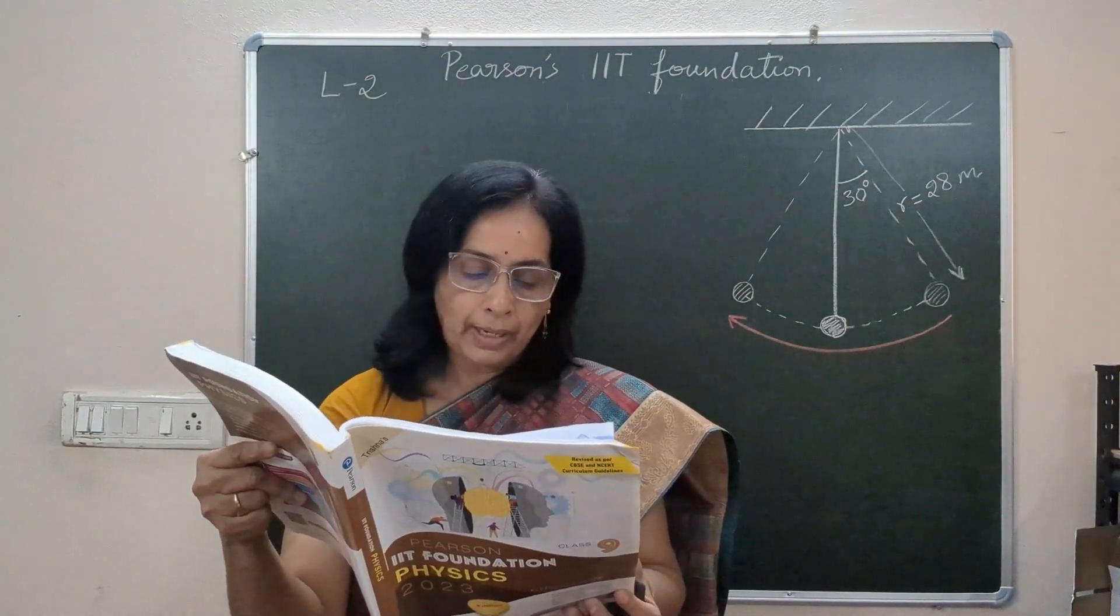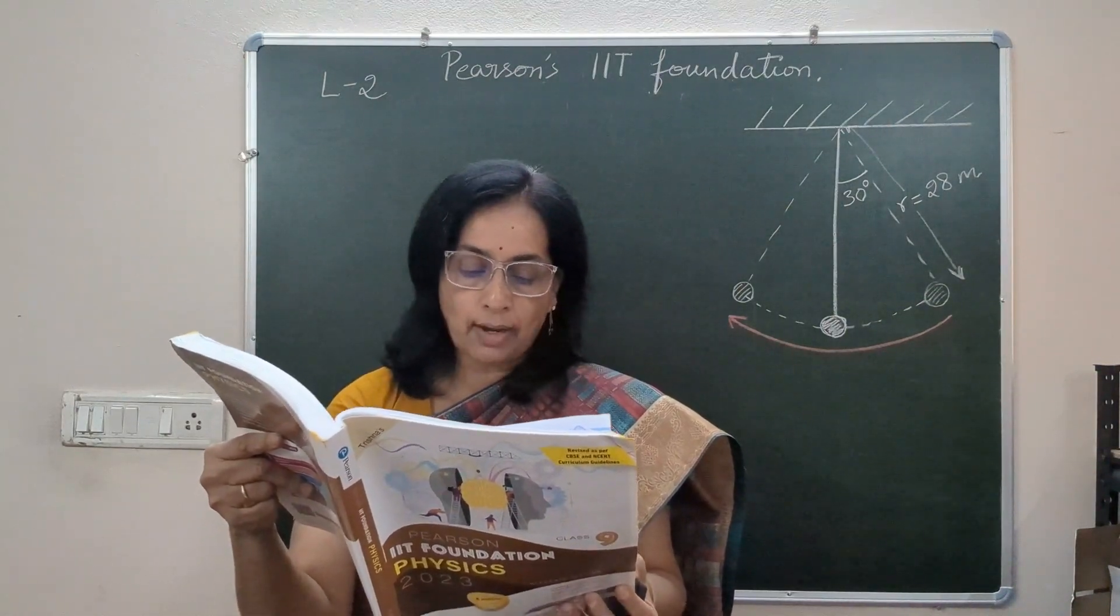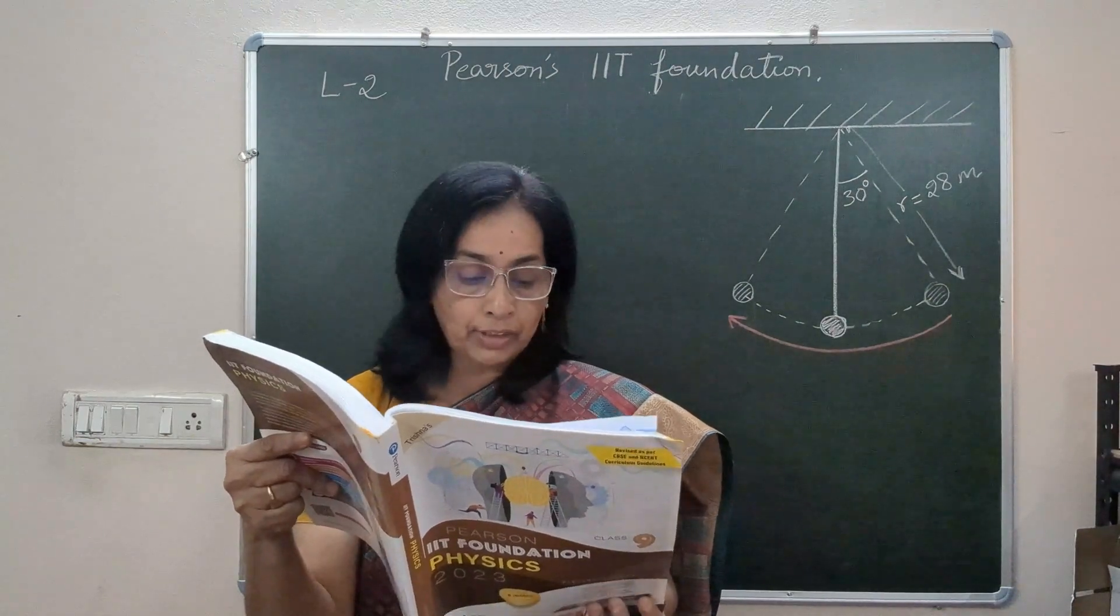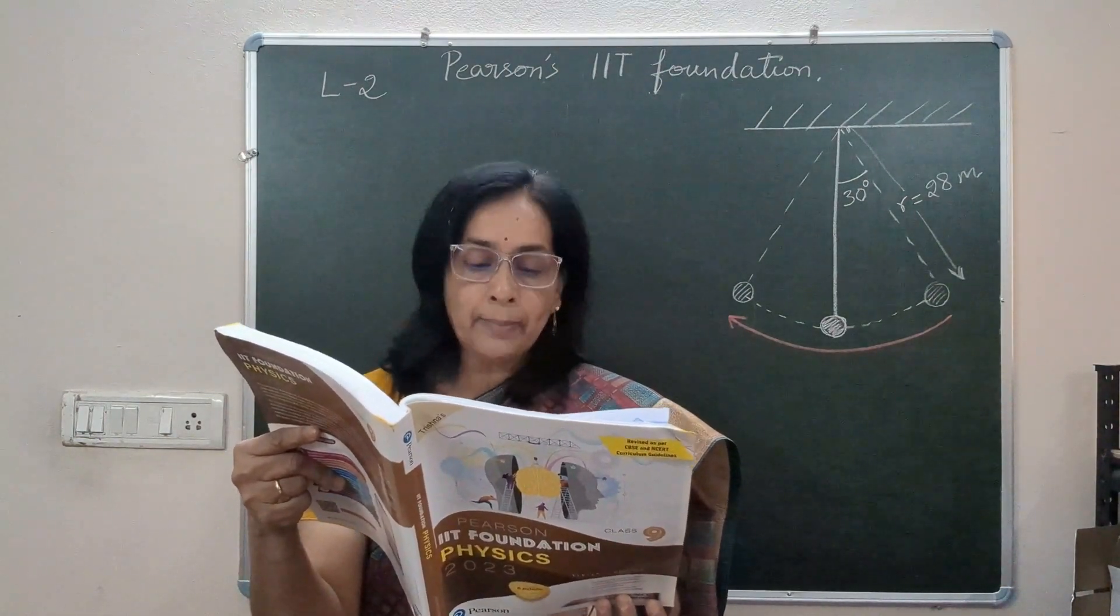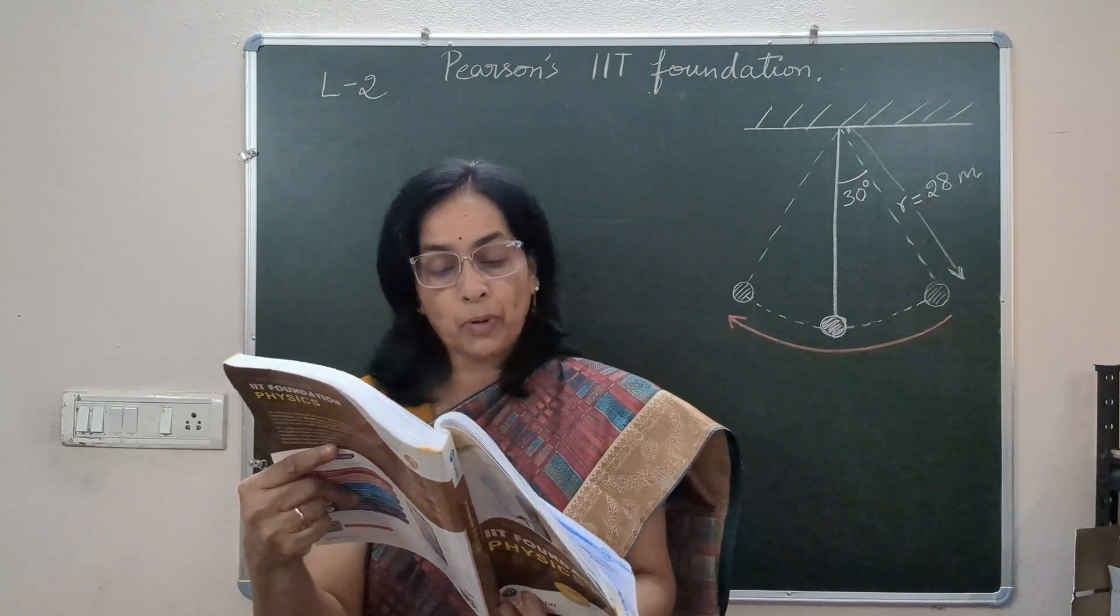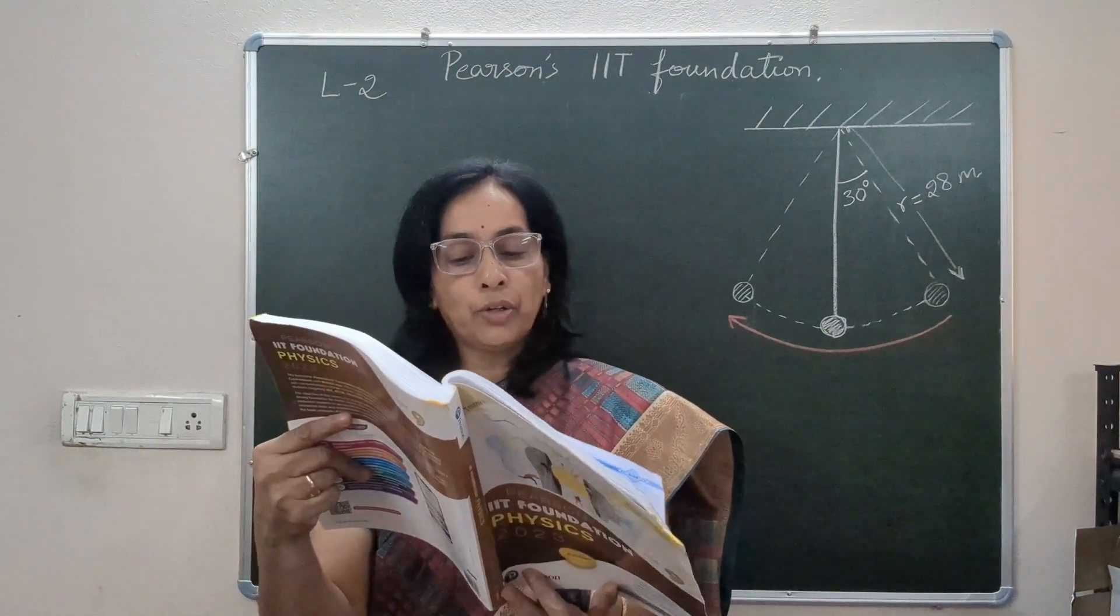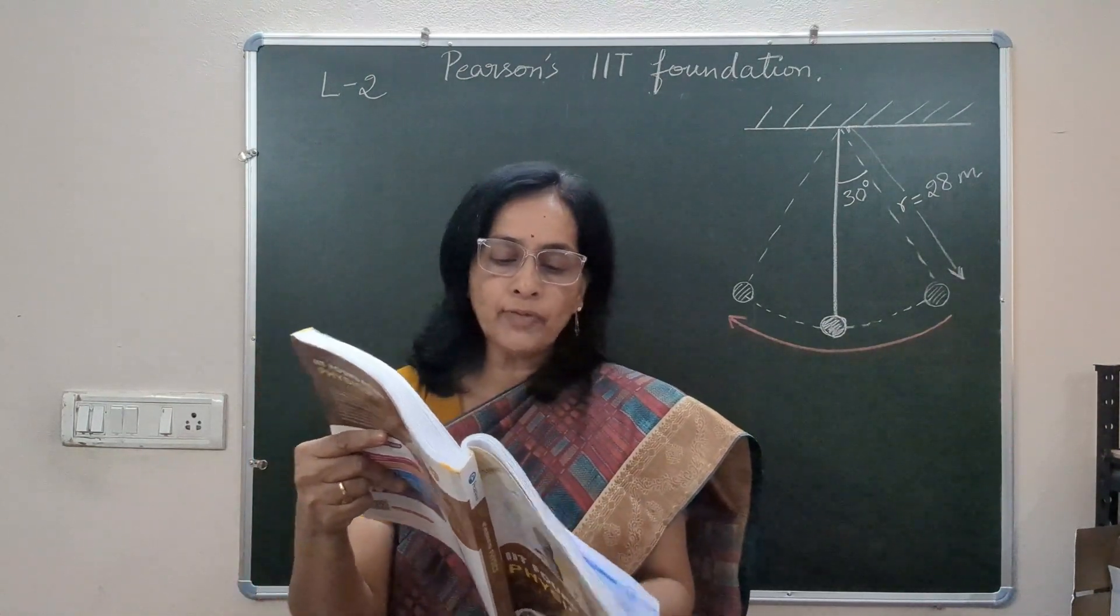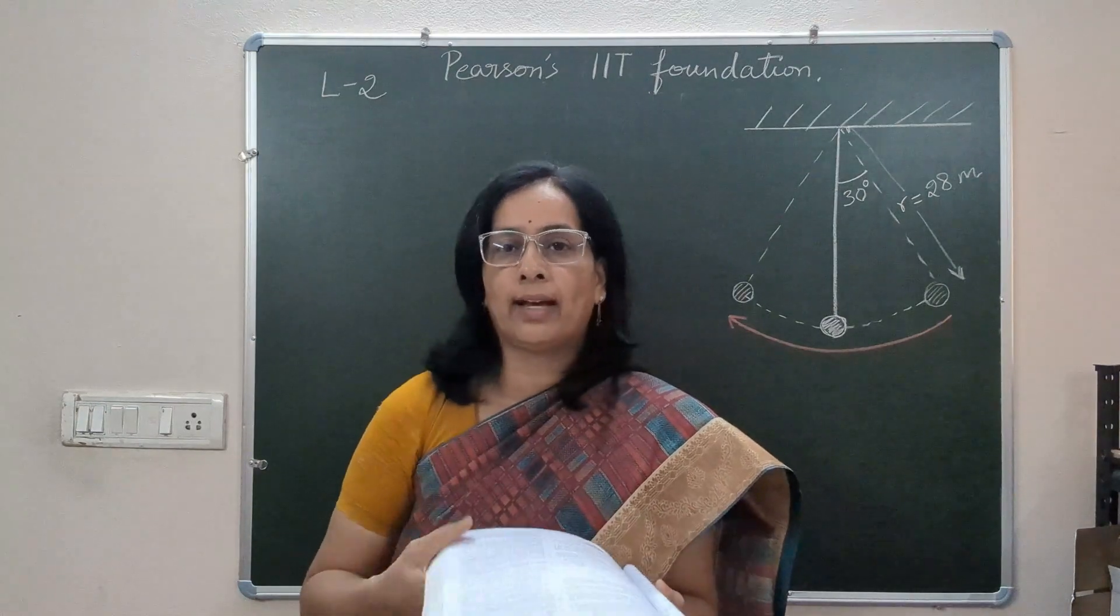The question is: a pendulum of length 28 cm oscillates such that its string makes an angle of 30 degrees from the vertical when it is at one of the extreme positions. We are supposed to find the ratio of distance to displacement of the bob of the pendulum when it moves from one extreme position to another.